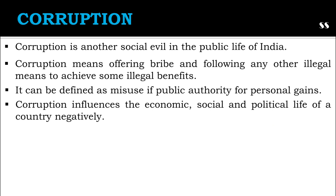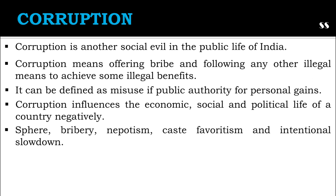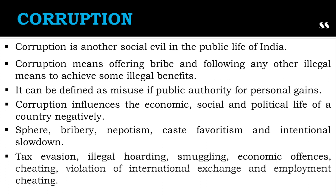Corruption of personal ethics and morality happens in the personal sphere. In the public sphere, bribery, nepotism, caste favoritism and intentional slowdown of work appear as various forms of corruption. During election time, these evil practices find inroads into social life. Political corruption leads to crime and nourishes misadministration. Things like tax evasion, illegal hoardings, smuggling, economic offenses, cheating, violation of international exchange and employment cheating all find space in corruption.